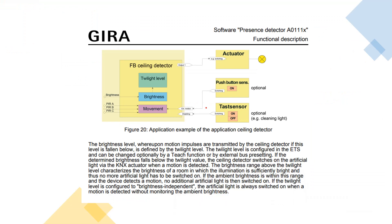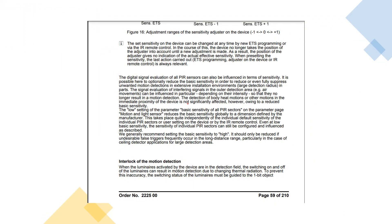This parameter page is about the brightness level upon motion. What they say here is: when the luminaire is on and there is no detection within the detection field, the switching on and off of the luminaire can result in motion detection due to a change in thermal radiation.